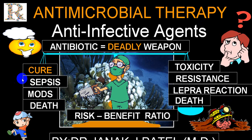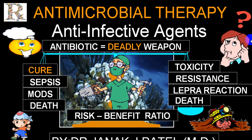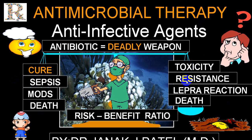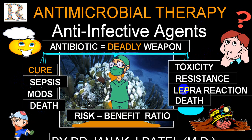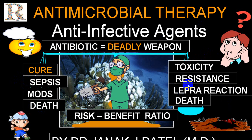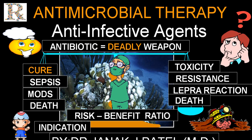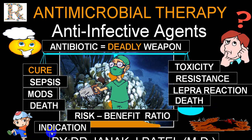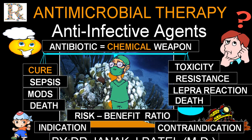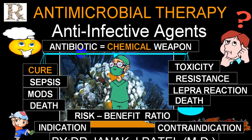The risk of infection includes sepsis, MODS, and death, which is lethal. At the same time, using an antibiotic can produce toxicity, resistance, dangerous side effects, and even death from misuse. If the benefit is more, it becomes an indication; if the risk is more, it becomes a contraindication. You can indirectly consider an antibiotic as a chemical weapon, and any chemical weapon must be used with caution.